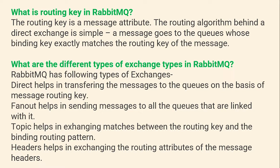What are the different types of exchanges in RabbitMQ? RabbitMQ has the following types: Direct — transfers the message to queues based on the message routing key. Fanout — sends messages to all queues linked to it. Topic — exchanges messages between the routing key and the binding routing pattern. Header — routes based on the header attribute of the message.